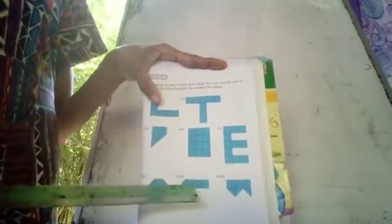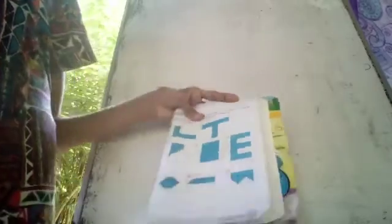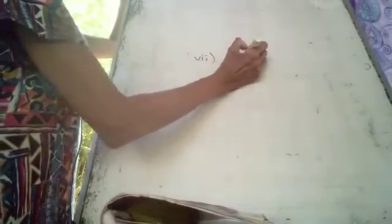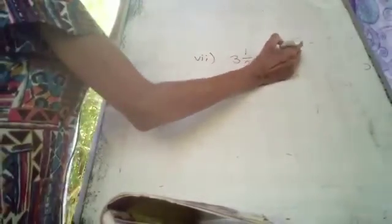Here. 1, 2, 3. 3 and half square cm. We can write it like this, 3 and half square cm.